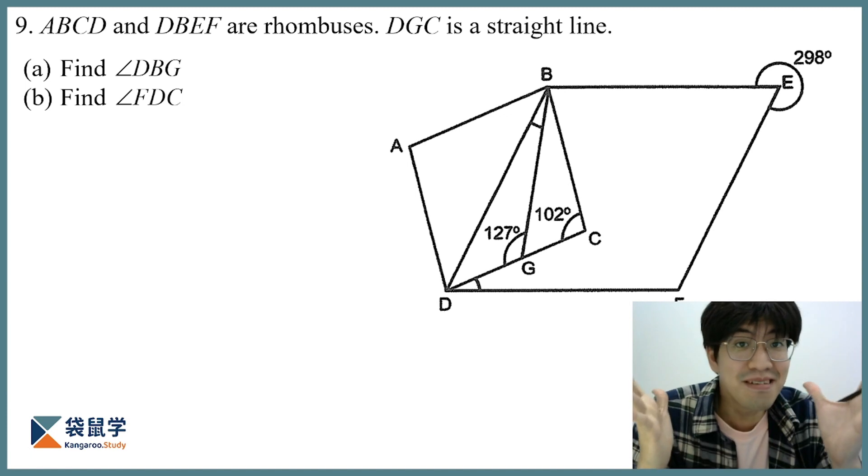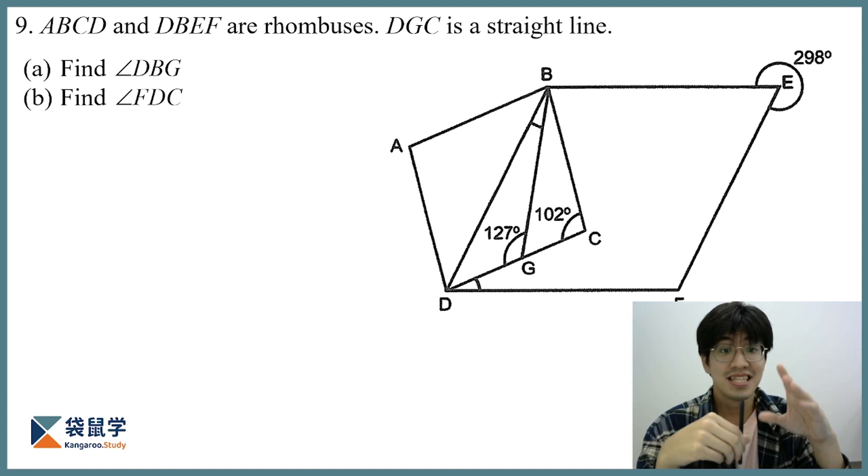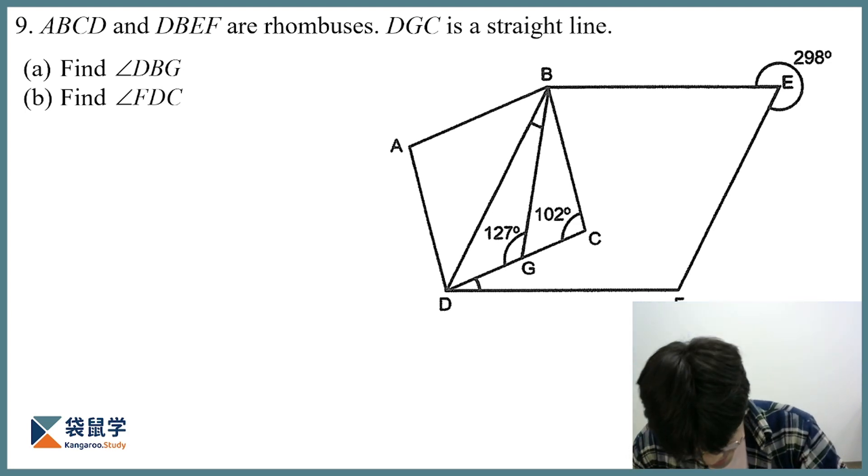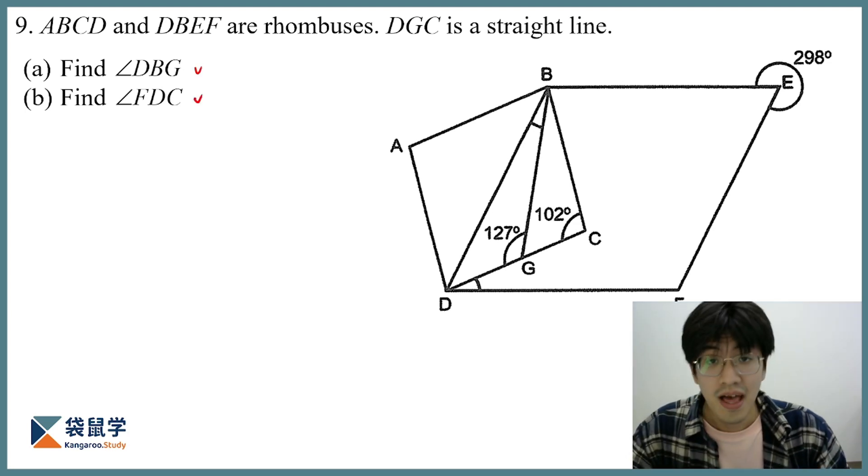So ABCD and DBEF are rhombuses, DGC is a straight line, and we have to find two angles, DBG and FDC.